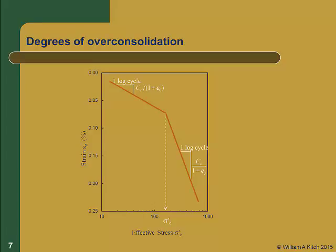Now that we have determined how to tell if a soil is over consolidated or normally consolidated, we have one more question: for a soil that is over consolidated, how over consolidated is it? That is, what is its degree of over consolidation — is it just a little over consolidated or is it highly over consolidated? Looking at the laboratory consolidation curve, we will have determined both the recompression and compression indices and the pre-consolidation stress sigma prime c. Then from our field data we will determine the current vertical effective stress sigma prime zero, and the difference between those will indicate the degree of over consolidation.